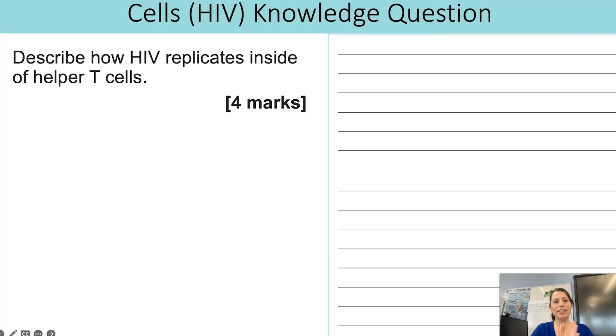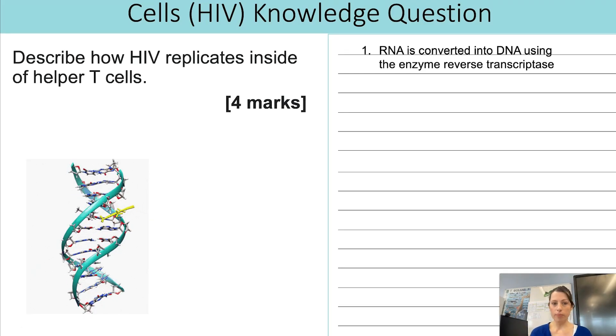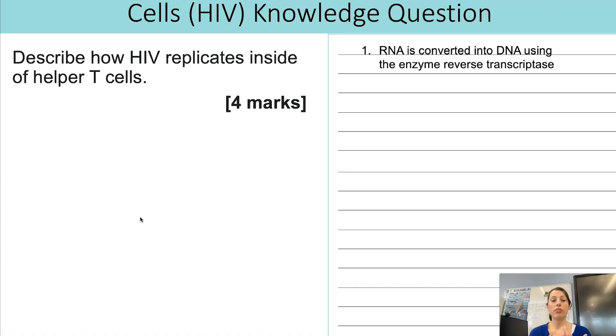So let's have a go at these questions and we start off with a knowledge question linked to the topic of HIV. So we are asked here to describe how HIV replicates. So describe is our command word and specifically we're thinking about the replication that's happening inside of the cells. So the sorts of things that I'd be including in this answer would be first of all we need to state that RNA is converted into DNA and that is done using enzyme reverse transcriptase. So you need to be talking about that enzyme for one of the marks definitely.